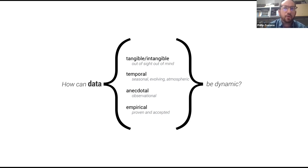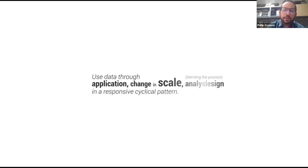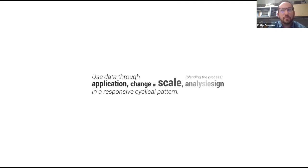Data can be done through observational recording and monitoring over time, and then obviously the empirical — this proven, accepted collection of data using scientific methods. So how does that now become dynamic? We can use this data through application, changing in scale, and blending both the analysis and design process. Something becoming really interesting in my research is that we can start to embed analysis into the design process, so it doesn't have to be separate silos but is much more comprehensive and integrated.